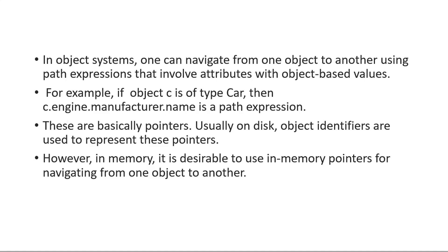If we are on the disk, object identifiers — that is, OIDs — are used to represent these pointers and for navigating from one object to another. However, in memory, we use in-memory pointers for navigating from one object to another.